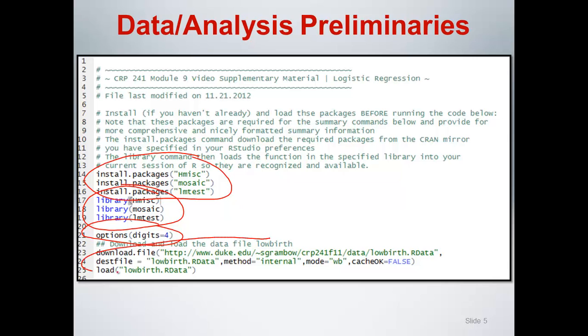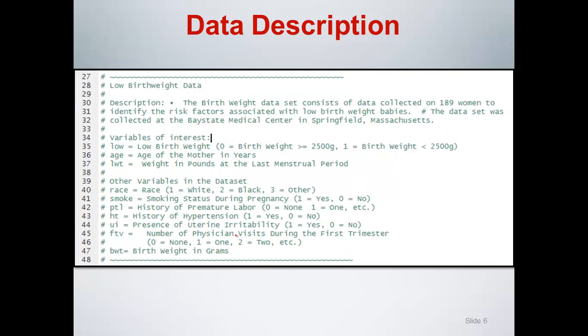We have an options command to specify how many digits we want to see to control the output. And then the actual low birth weight data is stored on my website and so we're going to download that and then use the load command once it's downloaded to load low birth, which is the data set of interest.